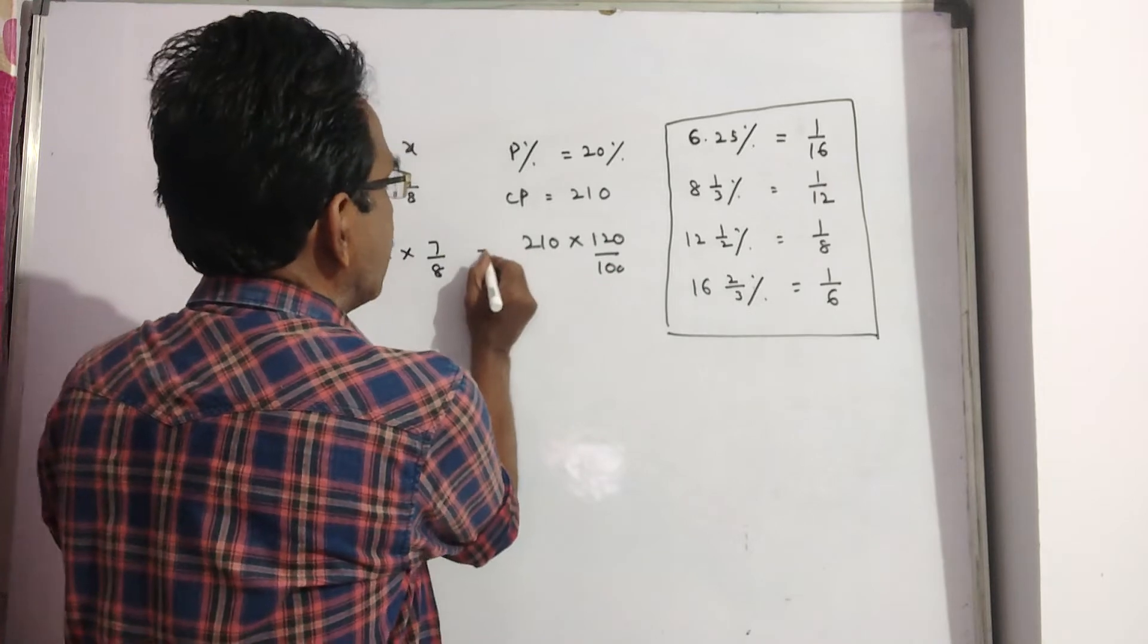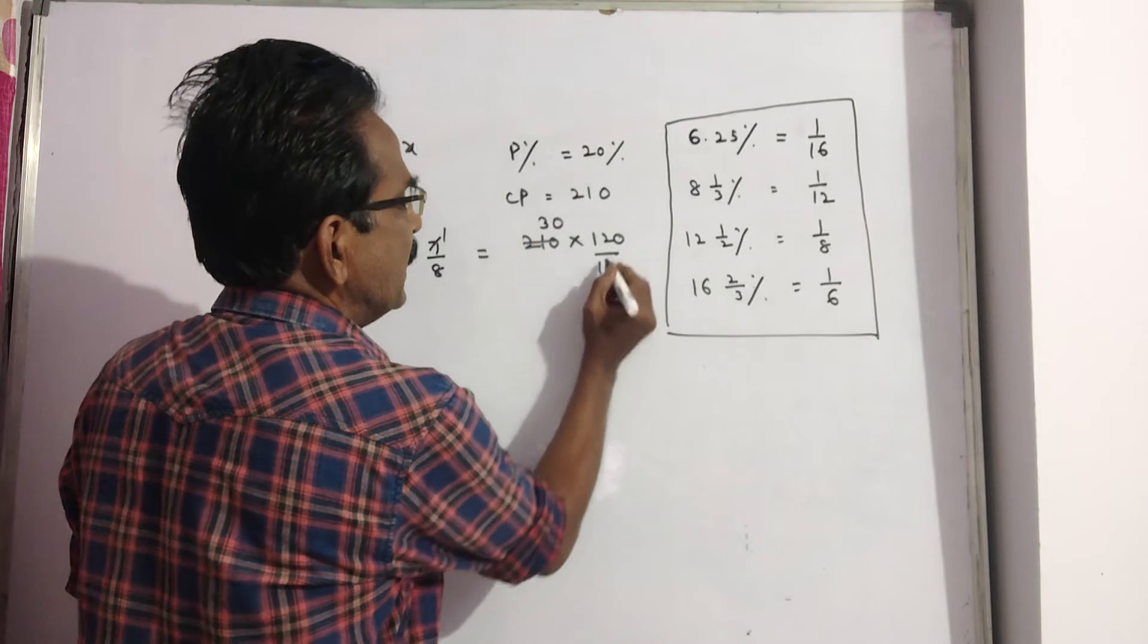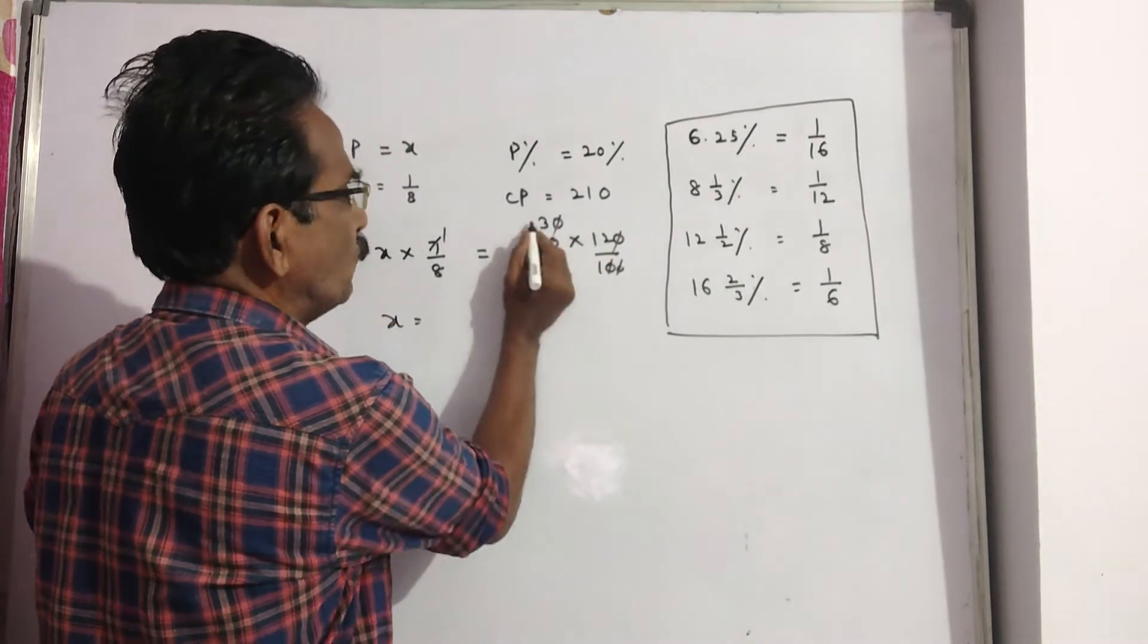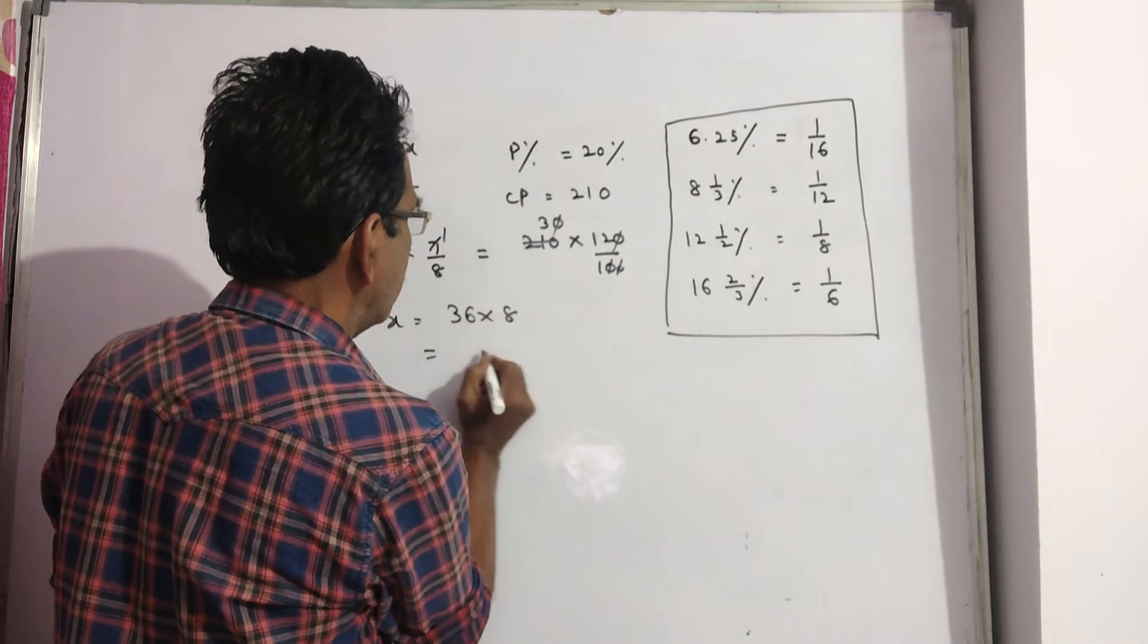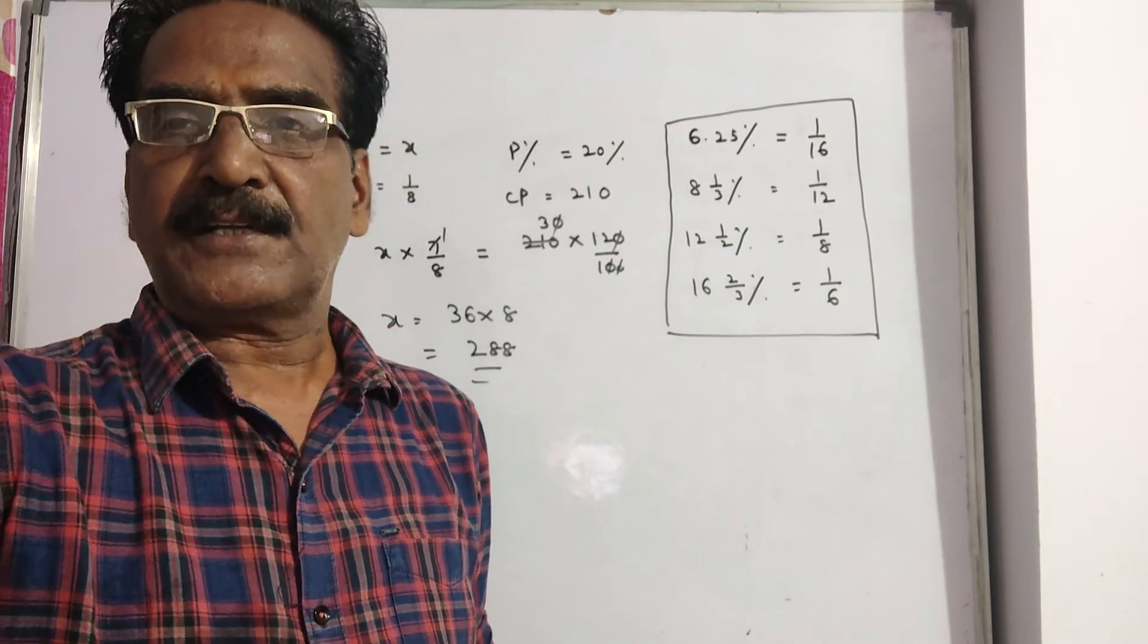So these two are equal. 7 ones, 7 thirties, two zeros get cancelled. So X is equal to 36 into 8. 36 into 8 means 48, 288 is your answer friends. 288 is the market price of the article.